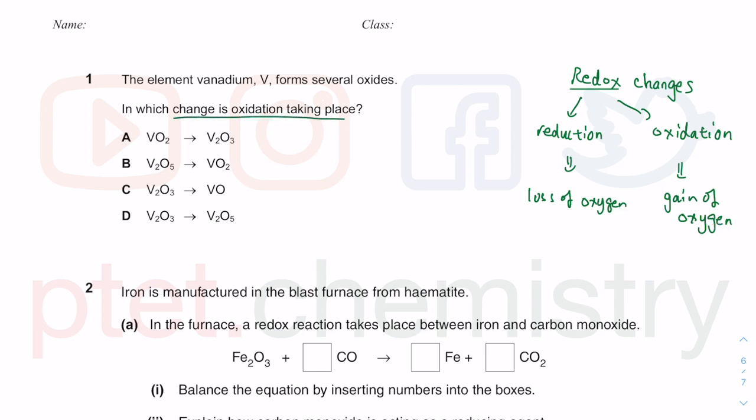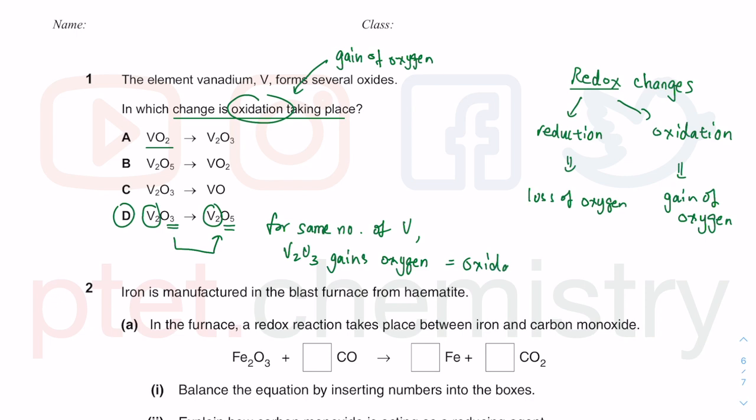In which change is oxidation taking place? Oxidation is gain of oxygen. VO2 becomes V2O3 - that looks confusing because the vanadium has increased. I'll tell you which one is not confusing. This is V2, this is also V2. There's three oxygen, there's five oxygen. For the same number of vanadium, V2O3 gains oxygen, going from three oxygens to five oxygens. This is definitely oxidation, which is option D.